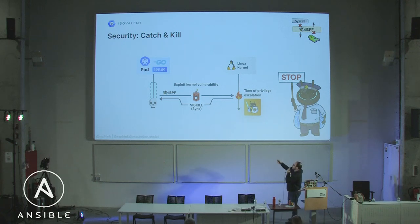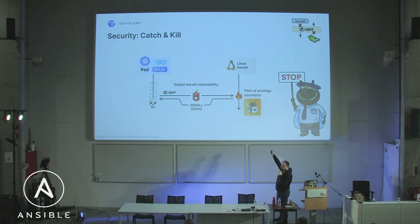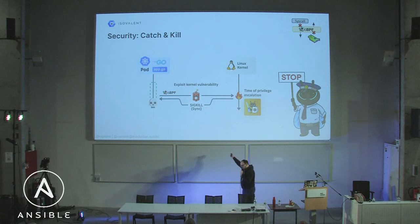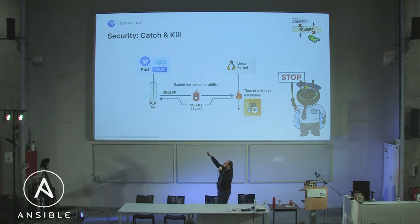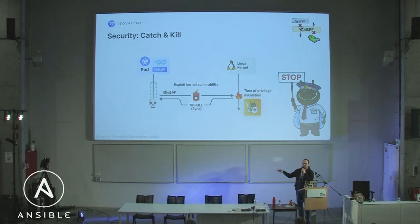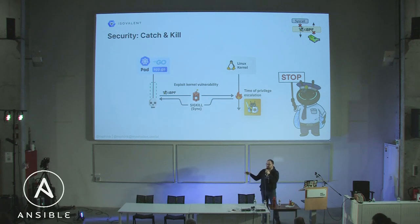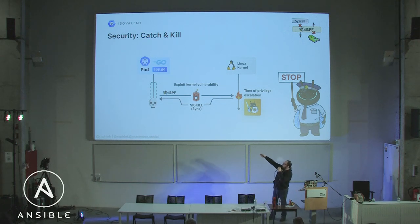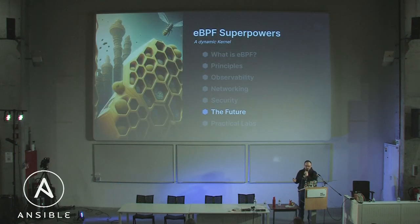With eBPF, we can have a callback that detects an execv or a namespace change or whatever, and then decide to kill the process. This kill is a real-time kill — it will not happen after the process has time to do something else, because it kills the process before the captured event can be scheduled in the kernel. Several tools use this — Tetragon is just one of them.